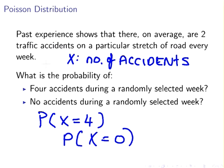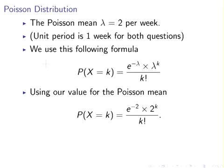The Poisson mean in both cases is lambda equal to 2 per week. Just as a remark, the unit period stays the same for both questions - it's one week. There's some questions where the unit period might change and that's something you have to look out for, though it's not relevant in this case.